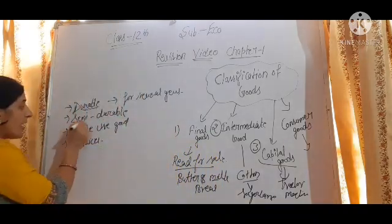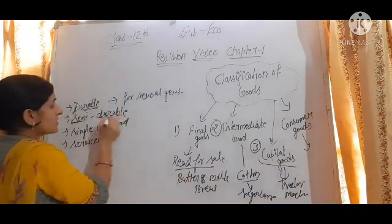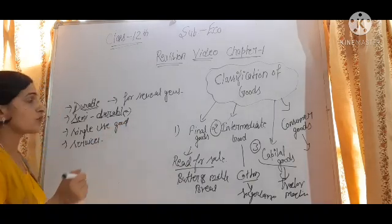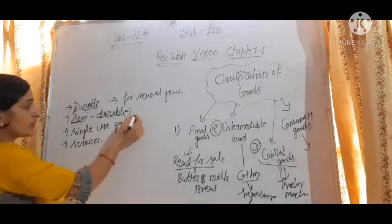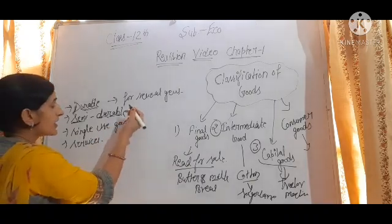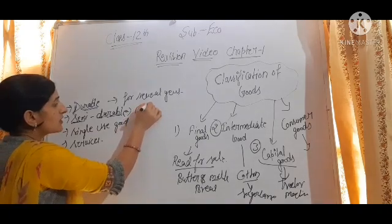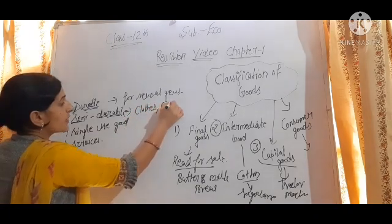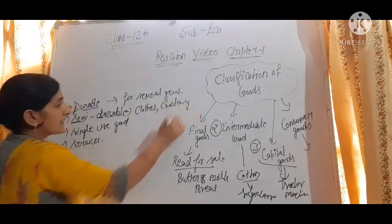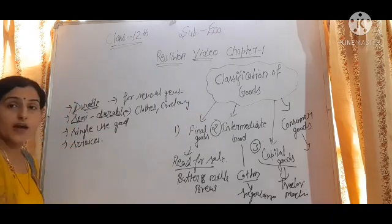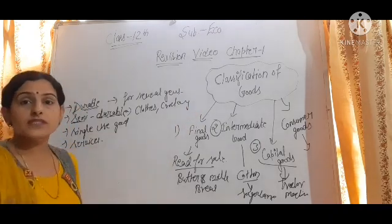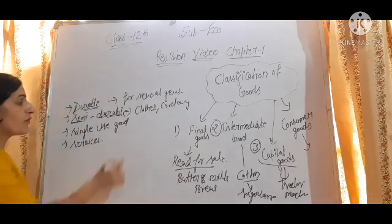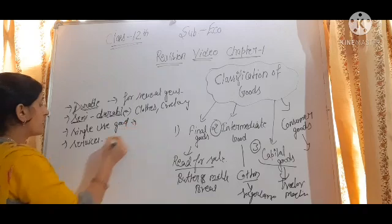Then we have semi-durable goods. Semi-durable goods are those goods which are used for one or two years. For example, clothes and crockery — all these are examples of semi-durable goods because they are used for only one or two years.